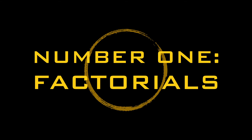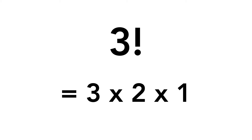First up: factorials. You may have seen these around. They're denoted by an exclamation point and can be found after a number. To solve for a factorial, you'll need to find the product of all the whole numbers from the number before the exclamation point all the way down to one. So in this example, we have three factorial — that means we're finding the product of the numbers from three to one: three times two times one.